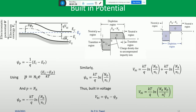The built-in voltage derived in the previous class was VBI = KT/Q * natural log of (Na * ND) / Ni². Na is the P-side doping level, ND is the N-side doping level, Ni is the intrinsic carrier concentration, K is Boltzmann's constant, T is the temperature in Kelvin, and Q is the Coulombic charge. At room temperature, KT/Q is around 25 mV. If the temperature given is 300 Kelvin, you can directly use KT/Q as 25 mV.